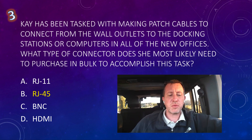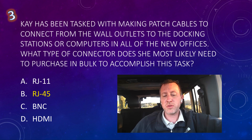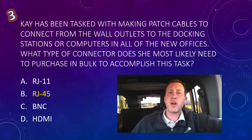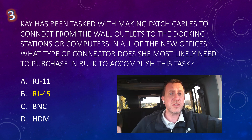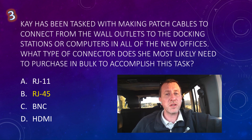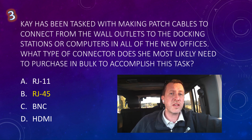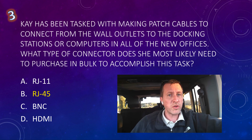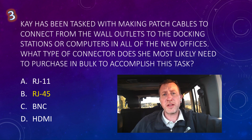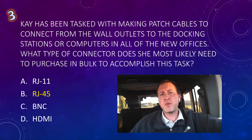Question three: Kay has been tasked with making patch cables to connect wall outlets to docking stations or computers in all the new offices. What type of connector does she most likely need to purchase in bulk? RJ11 is used for analog telephone lines and accepts four wires. RJ45 is the connector used on Ethernet cable — it accepts eight wires and is used for Category 5, 6, 6A, and so on. So RJ45 is what she wants. BNC is a coax connector, and HDMI is for audio and video. The answer is B, RJ45.